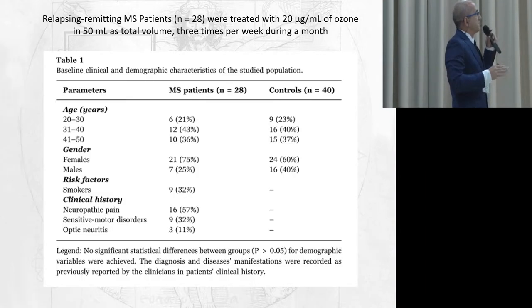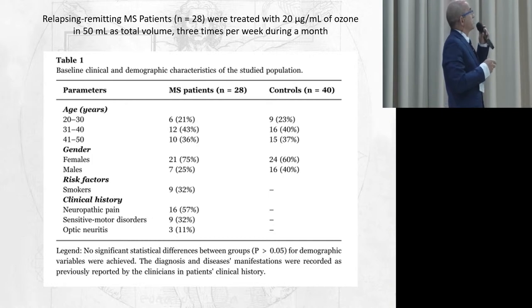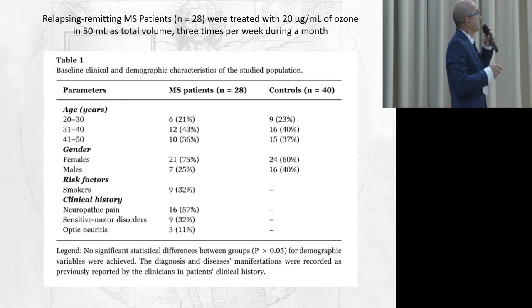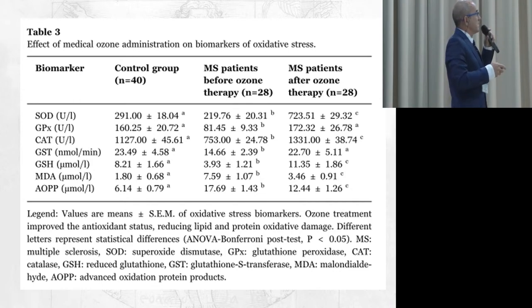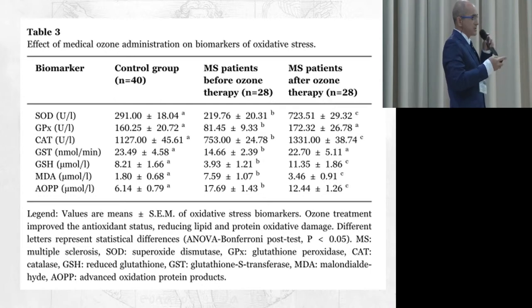The most recent paper on this topic was done in Mexico with 28 patients with multiple sclerosis, who were treated with 20 micrograms per milliliter of ozone rectally. We used a control group of patients and a group of patients with multiple sclerosis — specifically, the relapsing-remitting type. The biochemical result was what we expected: in patients treated with ozone, the level of antioxidant enzymes was increased and the indicators of oxidative stress were reduced. This is more or less the regular result we obtain in every clinical trial.